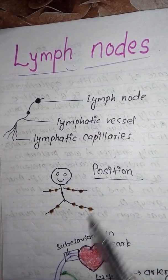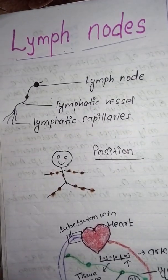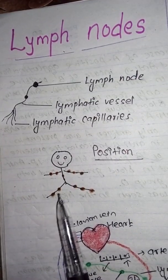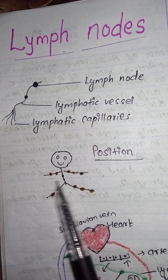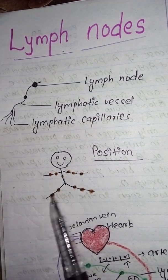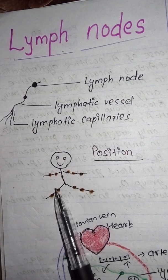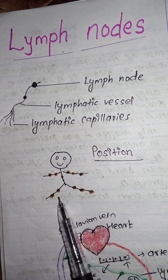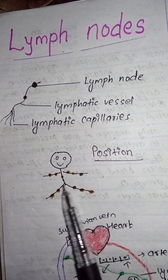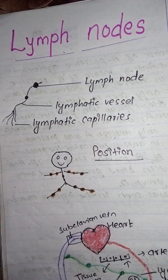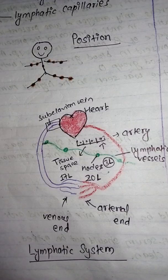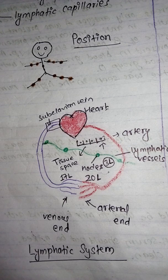This is about the position of the lymph nodes. They are present all over the body — in almost every part, like the legs, the hands, and the trunk. The lymph will flow from one node to another.